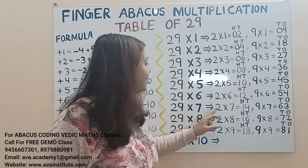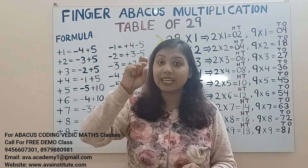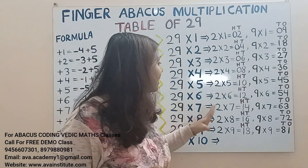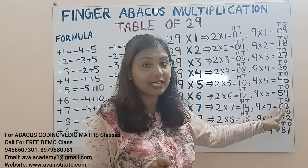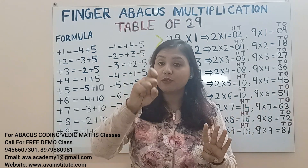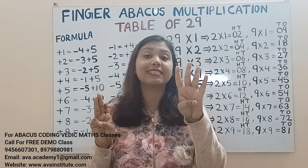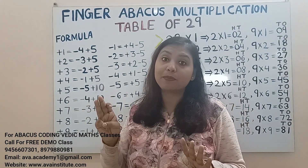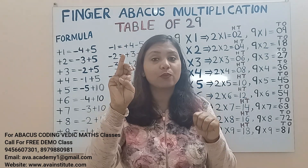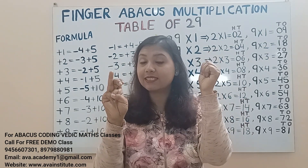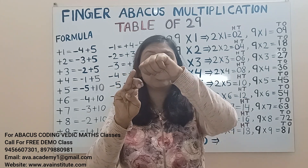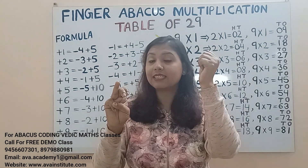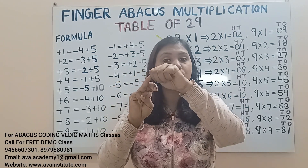Next, 29 sevens. 2 sevens are 14 — add 1 in hundreds and 4 in tens. 9 sevens are 63 — add 60 in tens and 3 in ones. To add 60, plus 6 formula is minus 4 plus 10, so plus 60 is minus 40 plus 100. The answer: in hundreds it is 2, in tens it is 0, in ones it is 1, 2, 3 — 203 is the answer.